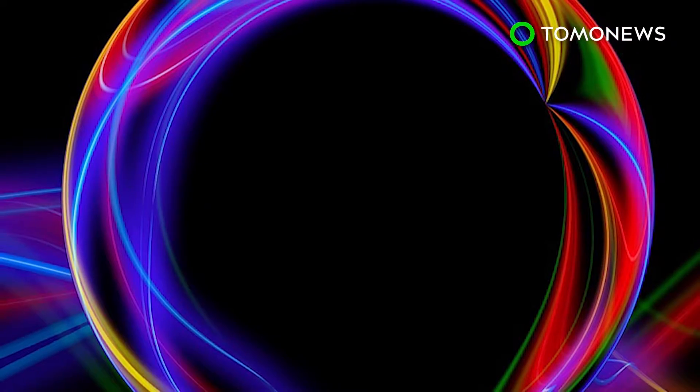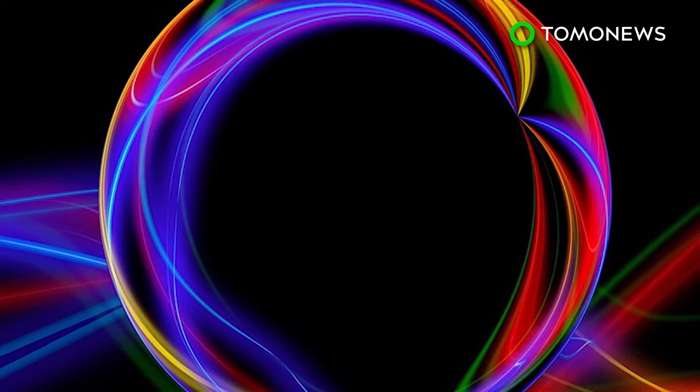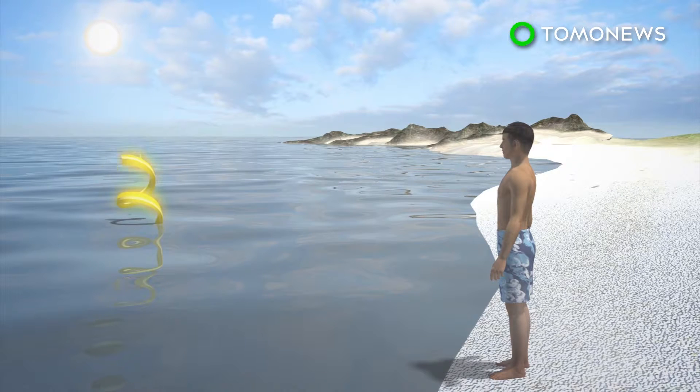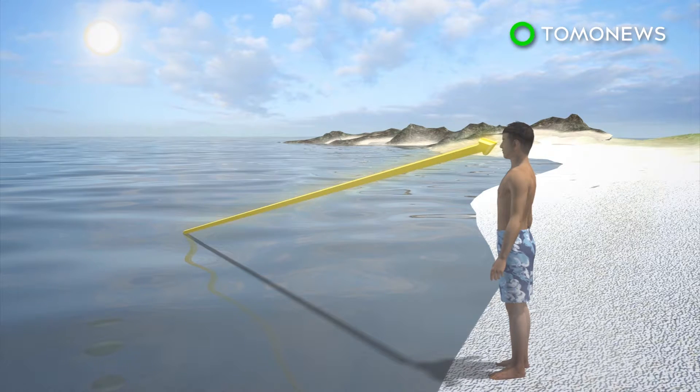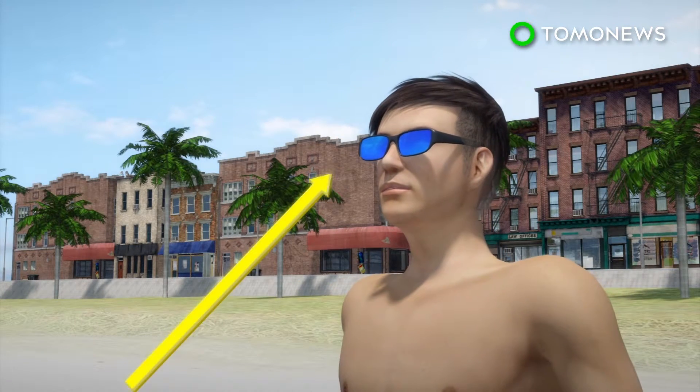Light waves vibrating across multiple planes are unpolarized, while those vibrating across just one are polarized. According to AllAboutVision.com, polarized light tends to reflect from flat surfaces and can create dangers such as glare and reduce visibility. Polarized lenses combat this with a filter that blocks this kind of light.